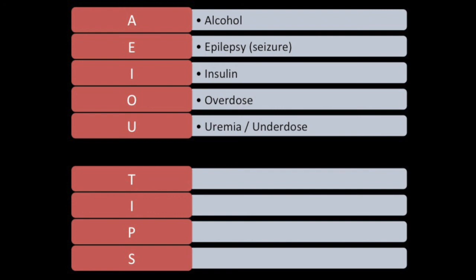Underdose means certain medications keep people mentally stable — whether that be psychiatric medicines or something for the thyroid. So it could actually be that they're not taking enough medication and that's why they're not acting right. T is for trauma — head trauma, and also neck trauma that can injure vessels and not perfuse the brain well.